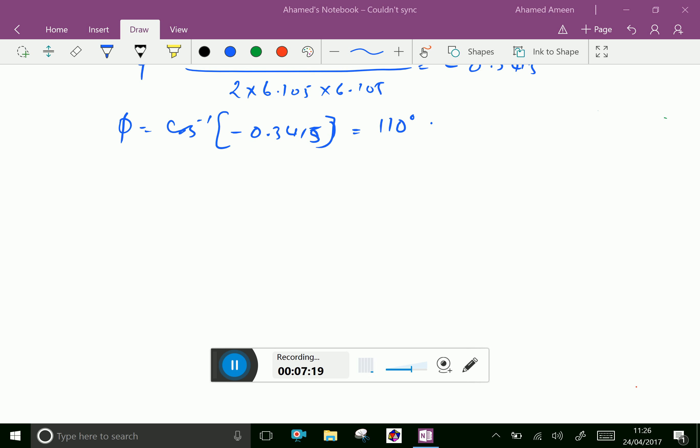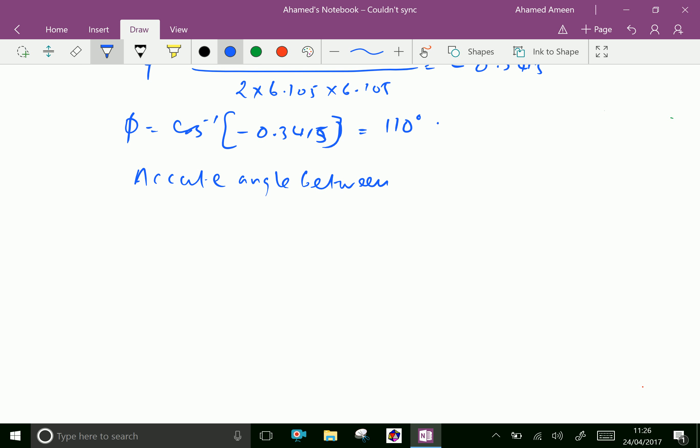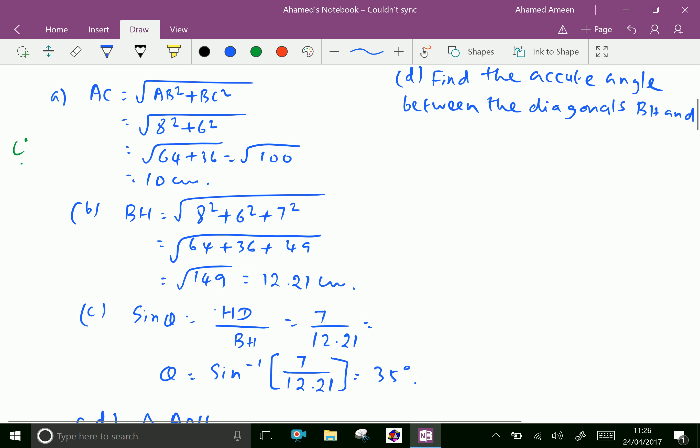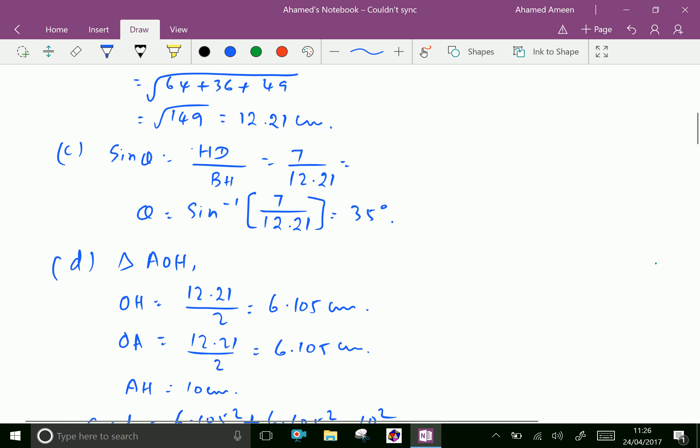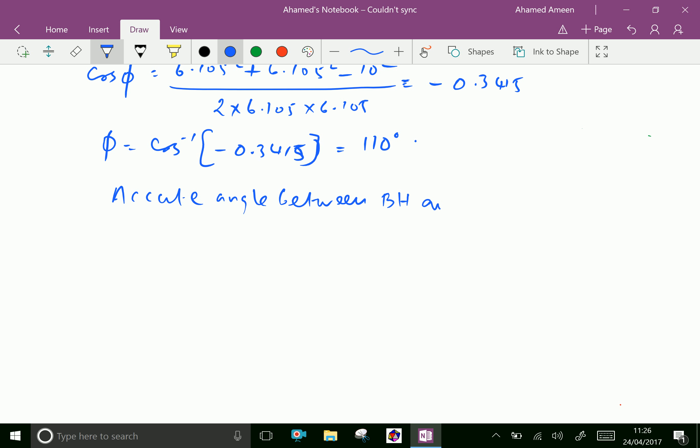Now we have to get the acute angle. Therefore, the acute angle between BH and AG equals 180 minus 110, which equals 70 degrees.